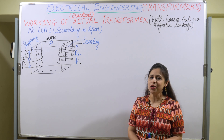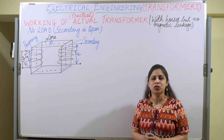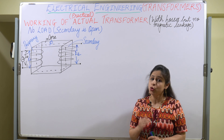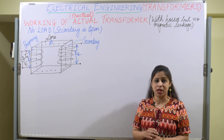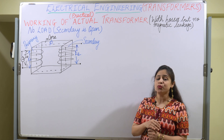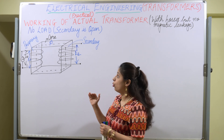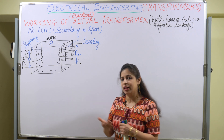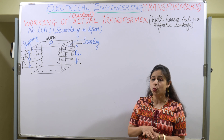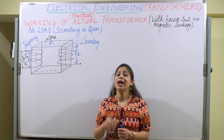Let us start with the working of the actual practical transformer when there are losses but no magnetic leakage. We are going to study about the transformer on no load — when there is no load, the secondary is open. We have already seen what an ideal transformer is and how it works on no load.